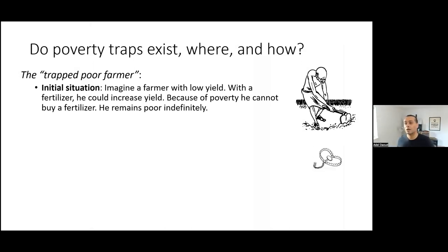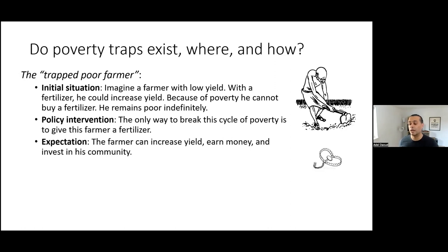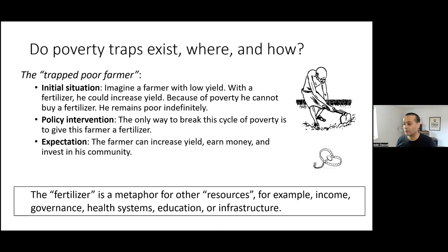The idea of a poverty trap can be characterized by a metaphor. Imagine a farmer who has an initial situation — he produces a low yield. If he had fertilizer, he could increase his yield, but because he is poor, he cannot buy it, so he remains in this situation indefinitely. The theory of poverty traps says one way to break the cycle is to give or lend this farmer the fertilizer — a metaphor for resources like income, governance, health systems, education, infrastructure, and so on.